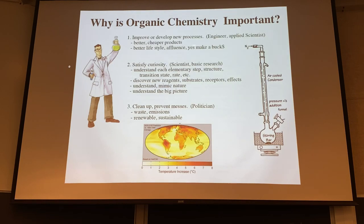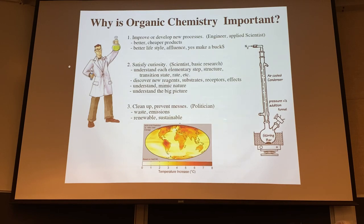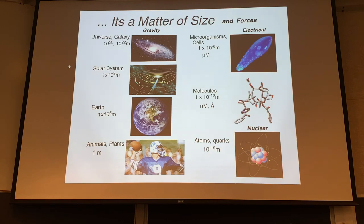Why is organic chemistry important? Three main things: improving processes for engineers and applied sciences - everything good in modern life is largely due to organic chemistry; basic scientists developing new products and understanding things at a fundamental level; and a political component - cleaning up messes, global warming, and pollution are also solved by chemists. Chemistry focuses on molecules at the nanometer or angstrom scale, 10 to the minus 10 meters.